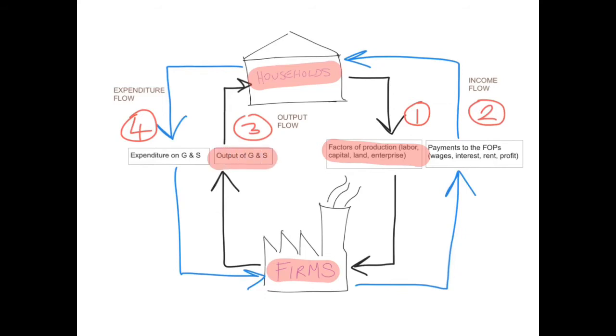This is the output flow. Also, there is the flow of money. When the firms receive the factors of production from the households, they in turn pay them the payments to the factors of production.